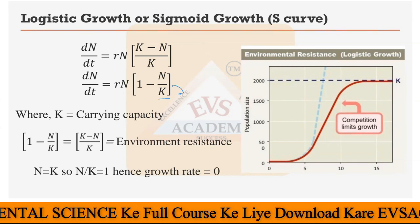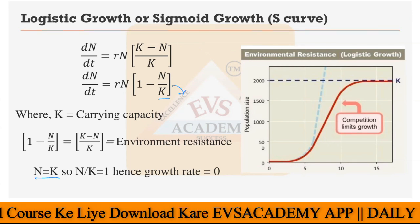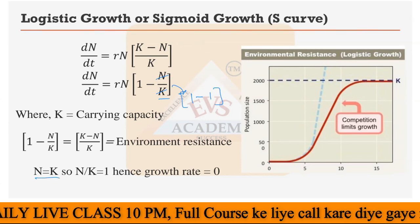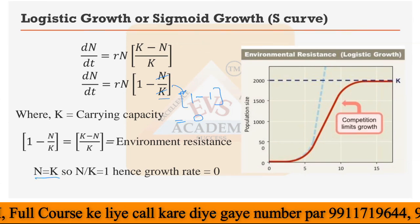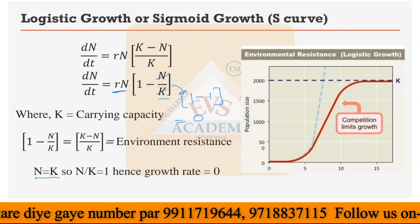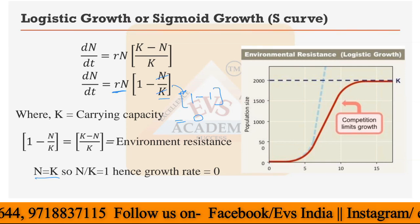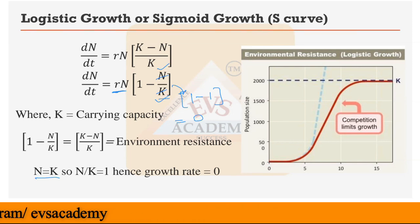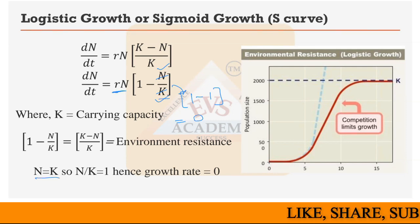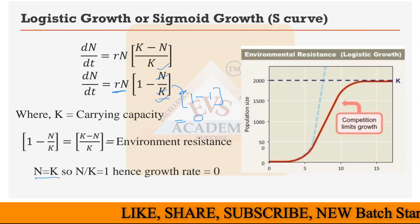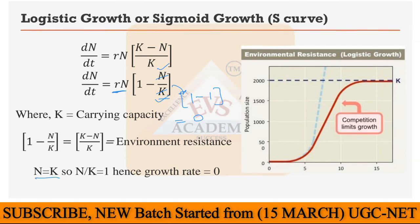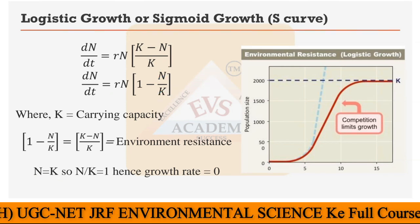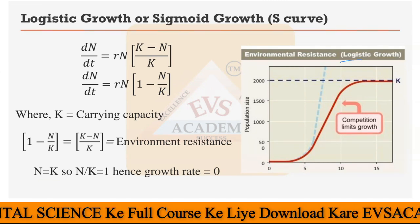Suppose in this formula N equals K. Then N/K equals 1, and the bracket becomes 1 minus 1, which equals 0. Whatever is multiplied by 0 is also 0, so dn/dt equals 0 — meaning there is no growth. When N equals K, the number of individuals has reached the carrying capacity, so no further growth takes place. This is the key result of the logistic growth rate formula.